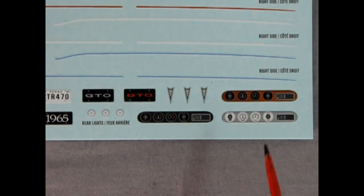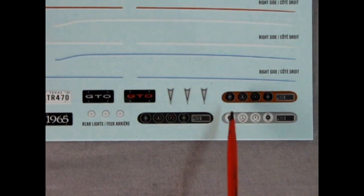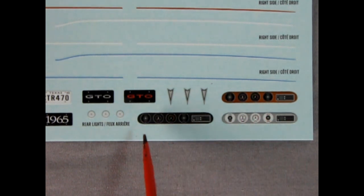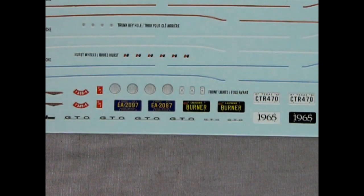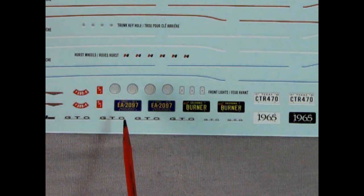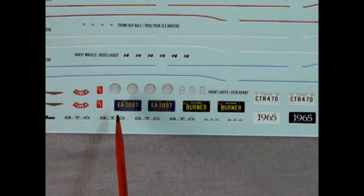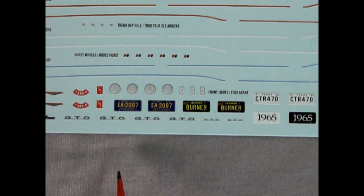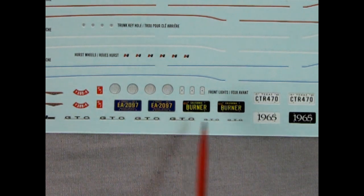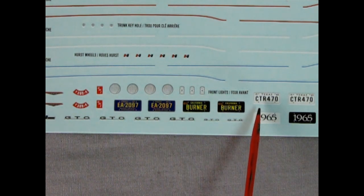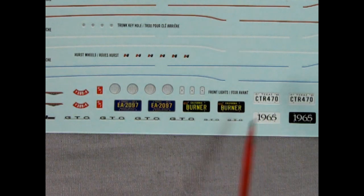Now here I just zoomed in a little bit on those instrument clusters. And again, look at how awesome that is. And for you license plate fans, this one's actually from Michigan. I had to take a closer look at it. EA-2097. There's your California burner. And your Texas CTR-470. And then, of course, factory plate 1965.